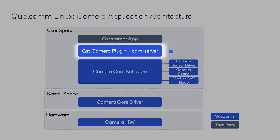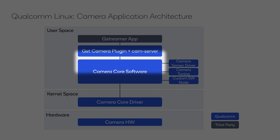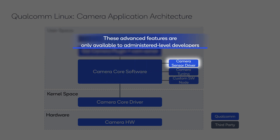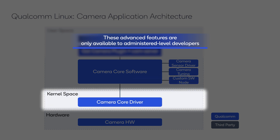First, there is a camera plugin, QTI QMMF Source, which is a GStreamer plugin that helps you capture a live stream from the camera subsystem. Next, we have the Qualcomm proprietary camera core software, which provides the interface to develop advanced features such as incorporating a custom camera sensor driver, implementing custom camera tuning workflows, and customizing software nodes. And finally, we have the camera core driver in the downstream Linux kernel.